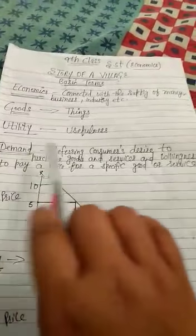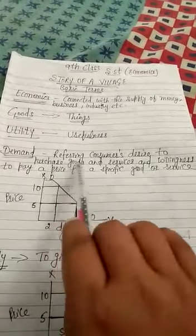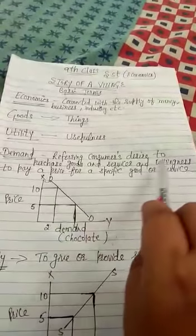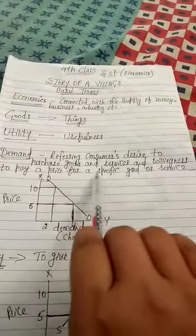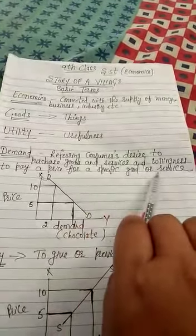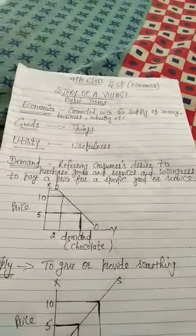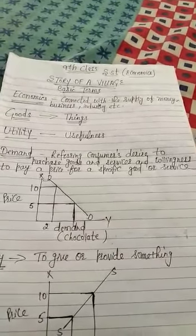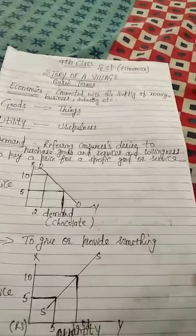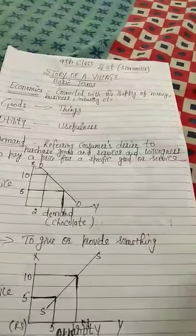Demand refers to consumers desire to purchase goods and services and willingness to pay a price for a specific good or service. Holding all other factors constant, an increase in the price of a good or service will decrease the quantity demanded.